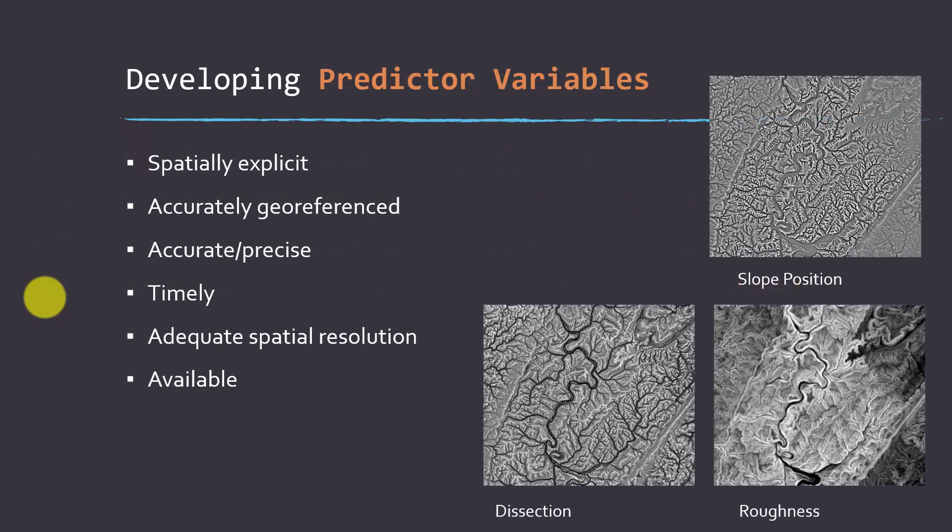Then you're going to need to have some predictor variables. And because we are wanting to predict out to a map space, we need to have those variables at every location in the map space so that we have a continuous map when we're done. So that means that your predictor variables also need to be spatially explicit. So you need to know where they occur. They should be accurately georeferenced, right? So the positional errors in the data don't have a really negative impact on the model. Again, they should be accurate and precise.